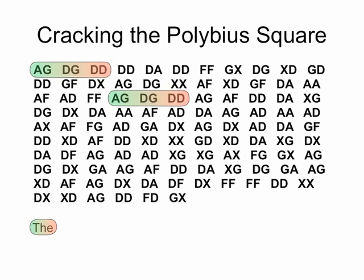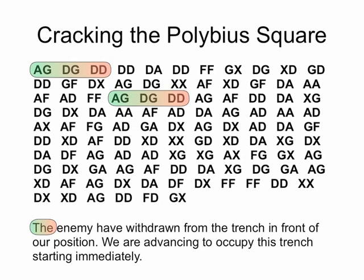I'm going to give you one last chance to try to solve this cipher. Now's the time — I'm telling you that AG equals T, DG equals H, and DD equals E. Go forth and solve it. Now, this is the complete solution: 'The enemy have withdrawn from the trench in front of our position. We are advancing to occupy this trench, starting immediately.'